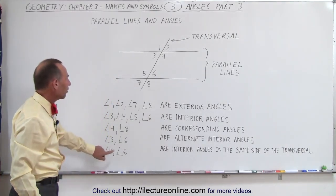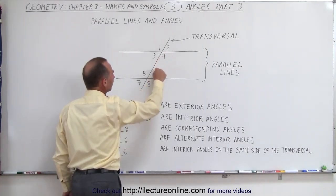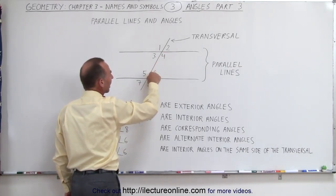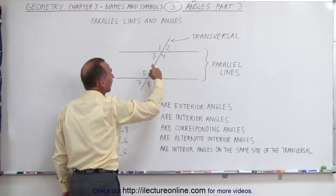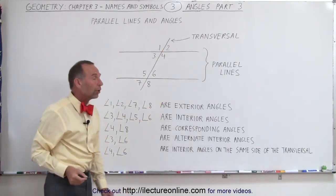What about angles four and six? Four and six now they don't have the same angular measure. Notice that this angle is less than 90 degrees. This one is greater than 90 degrees. In actuality, they add up. Those two angular measures add up to 180 degrees.